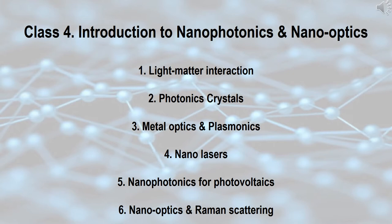First, I will briefly introduce the principles underlying the light-matter interaction, recapping Maxwell equations and other principles. Second, I will talk about photonic crystals, in which light-matter interaction occurs in periodic and regular sub-wavelength structures. Third, I will talk about metal optics and plasmonics. Fourth, I will briefly talk about nano-lasers focusing on random lasers. Fifth, I will talk about nanophotonics applied for photovoltaic systems. Finally, I will end with nano-optics and Raman scattering with perspectives on nanophotonics.